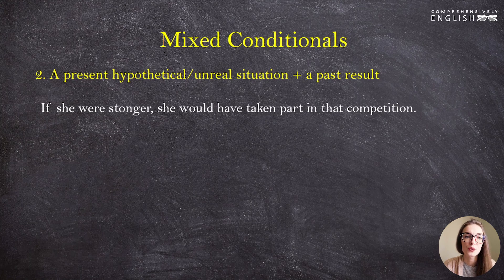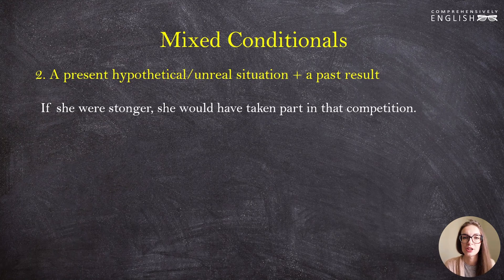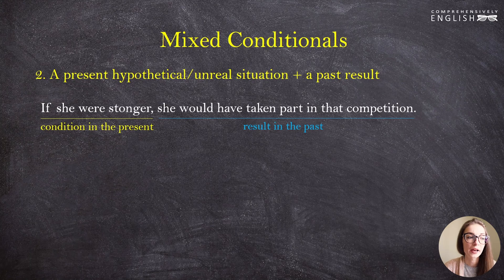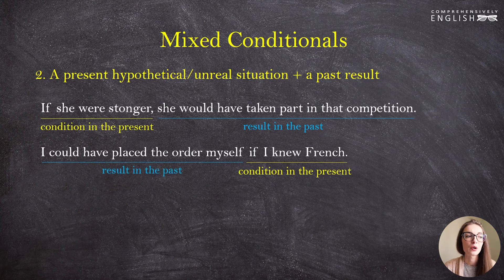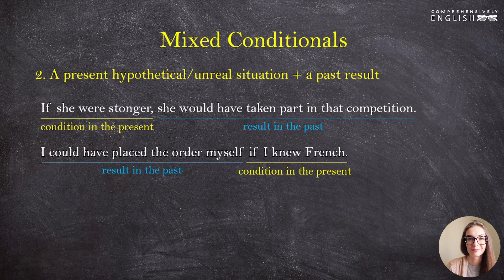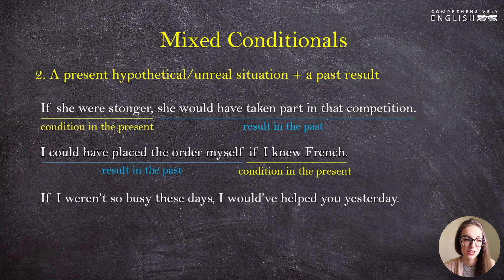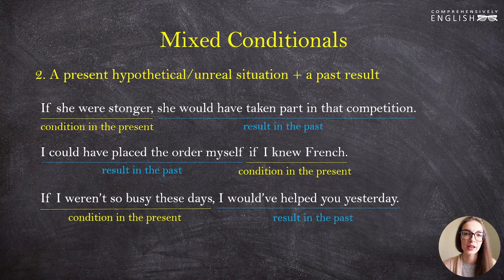Examples: 'If she were stronger, she would have taken part in that competition.' We speak about a broader present here — not literally now but in general. The condition is in the present and the result is in the past. 'I could have placed the order myself if I knew French.' The condition is in the present — if in general I were a person who knows French — and the result is in the past. 'If I weren't so busy these days, I would have helped you yesterday.'